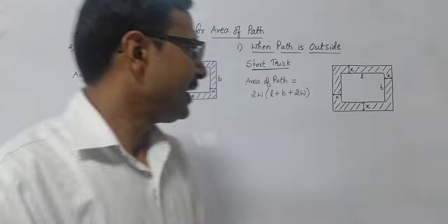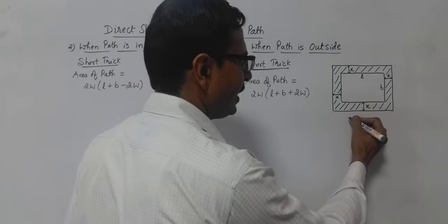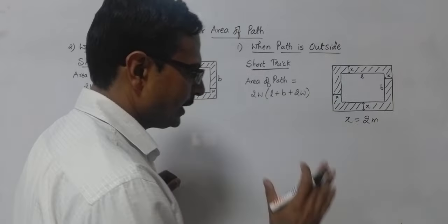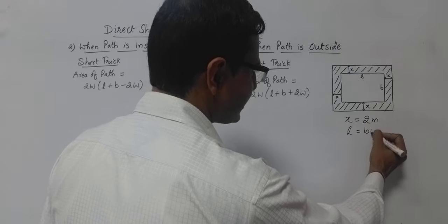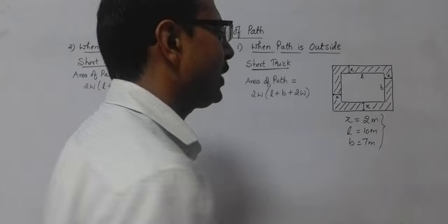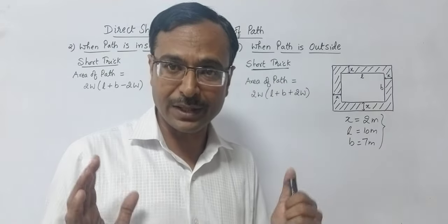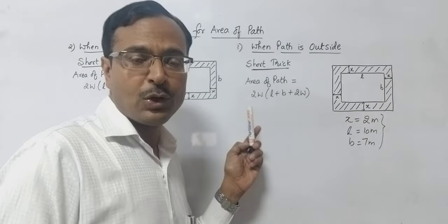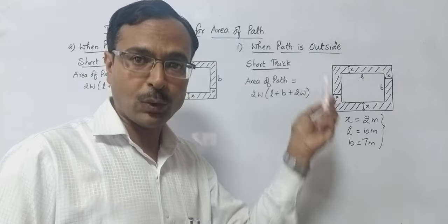So let's see the question. In the first question, I am taking the width of the path x as 2 meters and the inner length and inner breadth, that is L and B, to be 10 meters and 7 meters. So I am assuming any particular value and you can find the area using the traditional approach and see whether the trick is working out or not. So I have written the trick here: short trick directly to find the area of the path when the path is outside the rectangular plot.